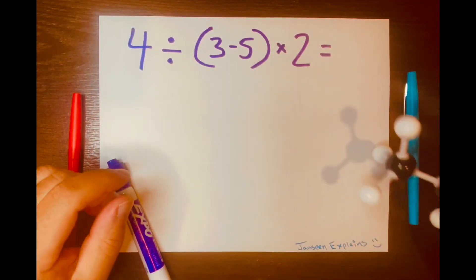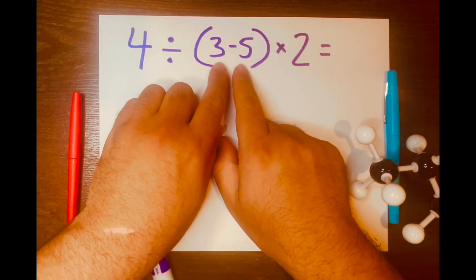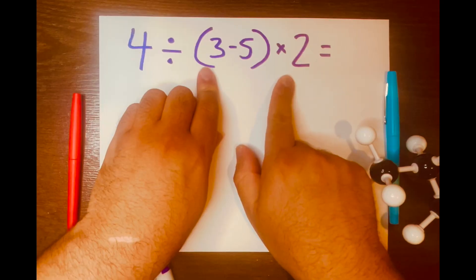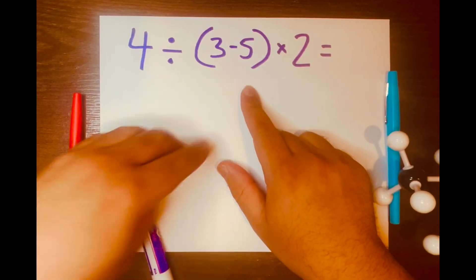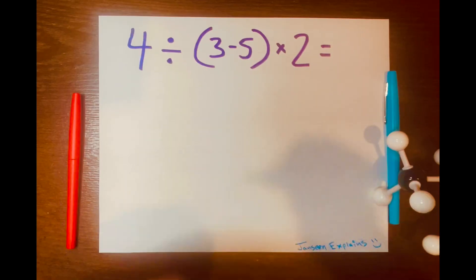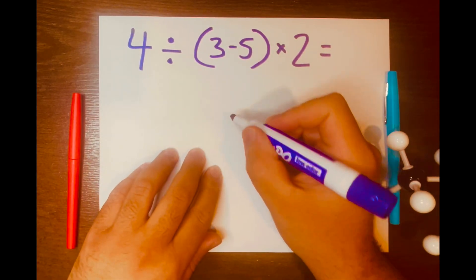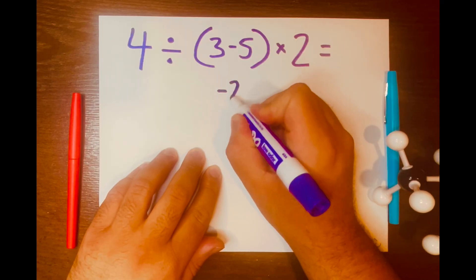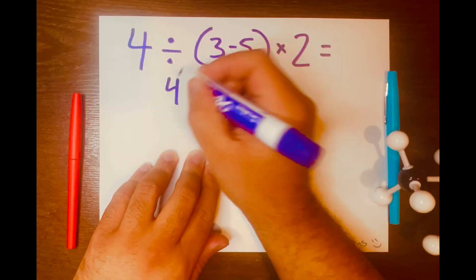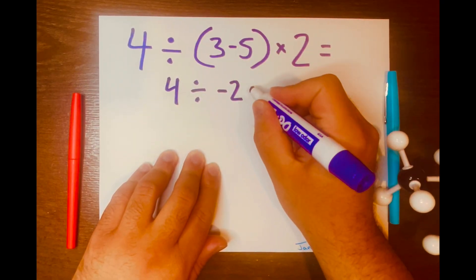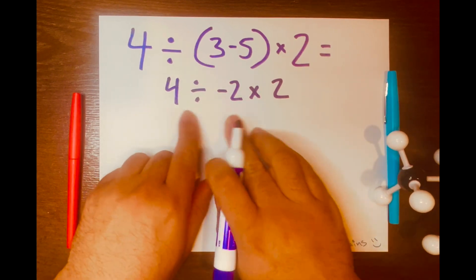And now let's begin solving this math problem. So 4 divided by (3 minus 5) times 2. I'm thinking of PEMDAS to solve this problem. And according to PEMDAS, what goes inside the parentheses will go first. So 3 minus 5 is negative 2. And I want to bring down the division symbol, the 4, the multiplication symbol, and the 2.